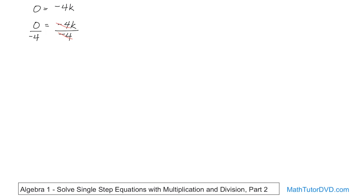Now on the left-hand side, 0 divided by anything is 0. So you have 0 is equal to k, or k is equal to 0.